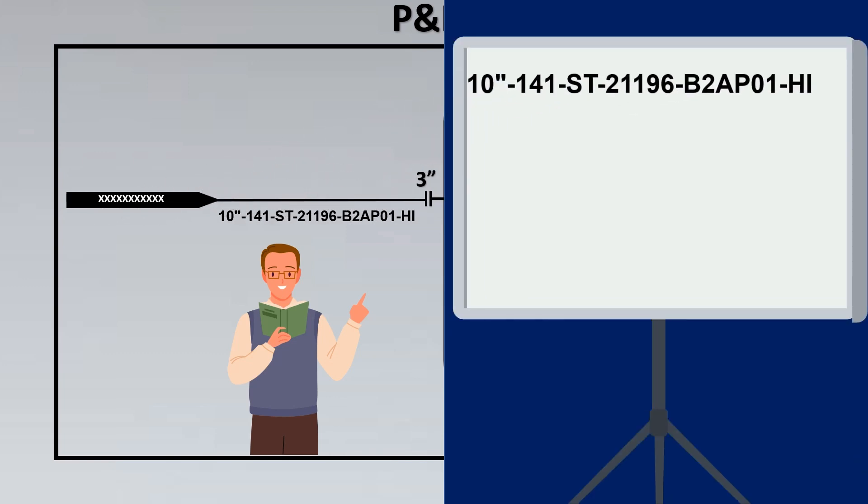So let's take a whiteboard and let's take this line number with us. Now each dash represents a particular section of the line number. So let us make each section to it. The first section basically represents the line size which is very simple. So this means it is a 10 inch line.